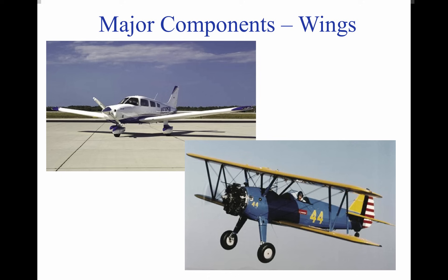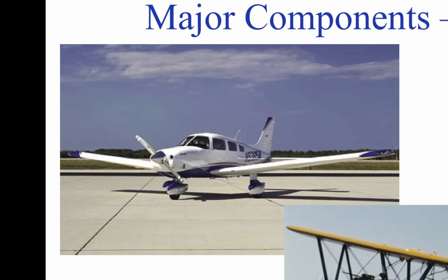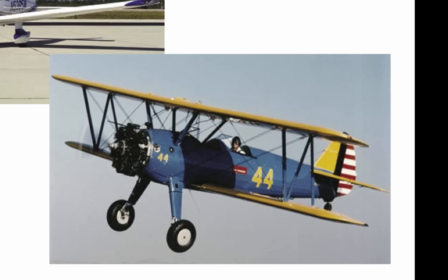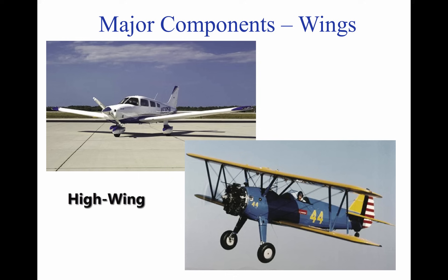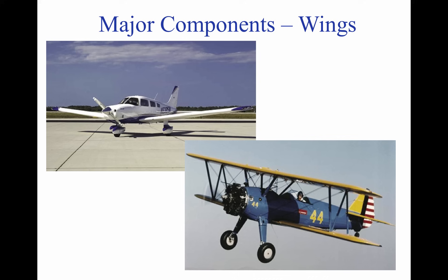There are many different designs, shapes, and sizes of wings used by the various manufacturers. However, their main purpose is to lift the plane into the air. The plane in the upper left has one wing and is called a monoplane. The plane in the lower right has two wings, referred to as a biplane. Wings can be placed above, on, and below the fuselage. These different wing placements are referred to as high-, mid-, and low-wing planes. Most high-wing planes have external struts to help dissipate the wing's load to the rest of the plane.